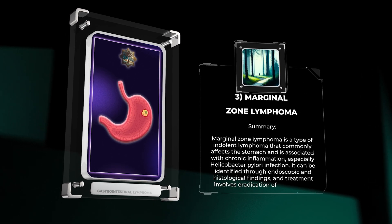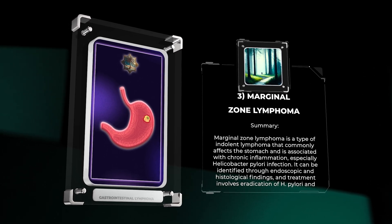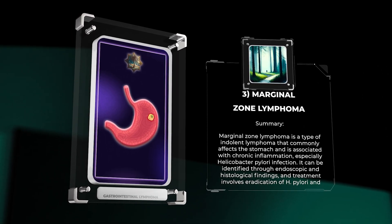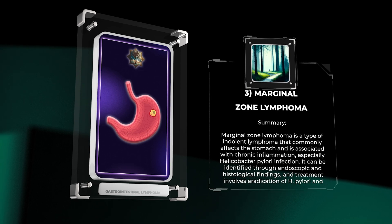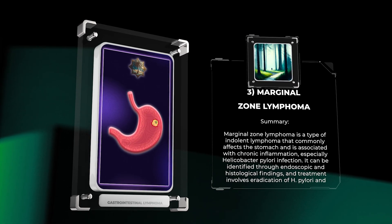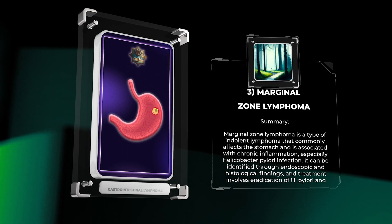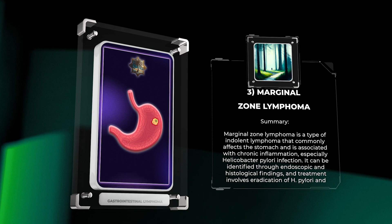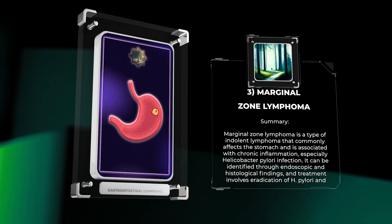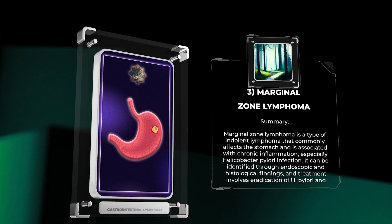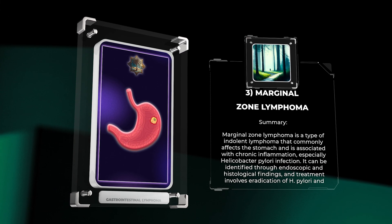Marginal zone lymphoma is a type of indolent lymphoma that commonly affects the stomach and is associated with chronic inflammation, especially Helicobacter pylori infection. It can be identified through endoscopic and histological findings, and treatment involves eradication of H. pylori and other therapies if needed.